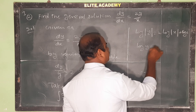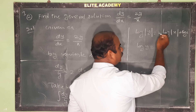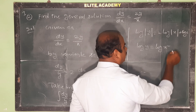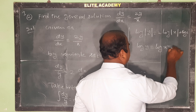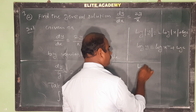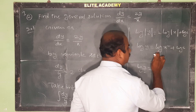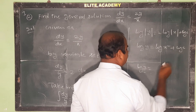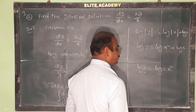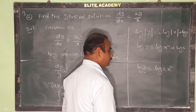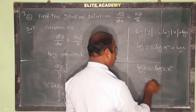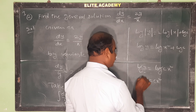So log y = 2 log x + log c. Using the formula log m + log n = log(mn), this becomes log y = log(cx²). Cancelling log on both sides, we get y = cx².